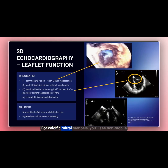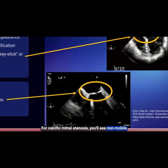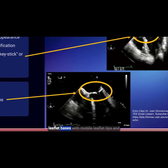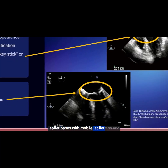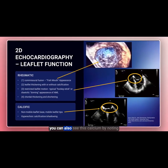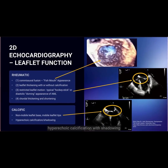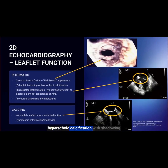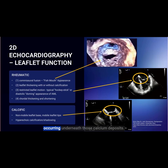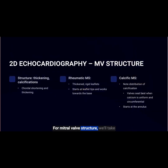For calcific mitral stenosis, you'll see non-mobile leaflet bases with mobile leaflet tips. You can also see this calcium by noting hyperechoic calcification with shadowing occurring underneath those calcium deposits.